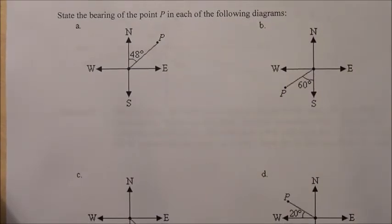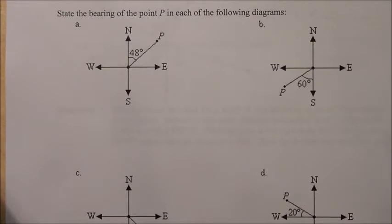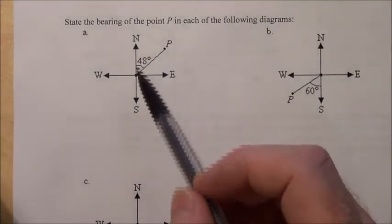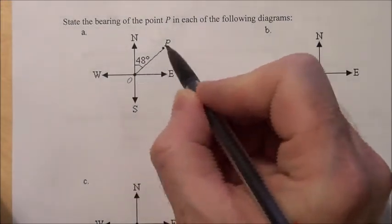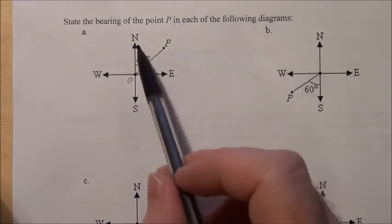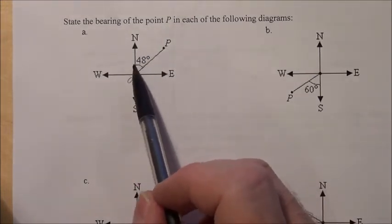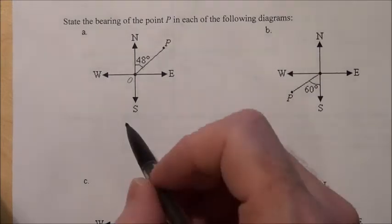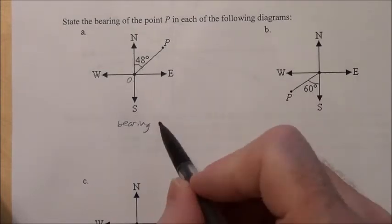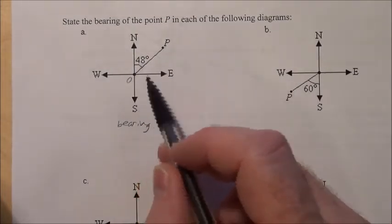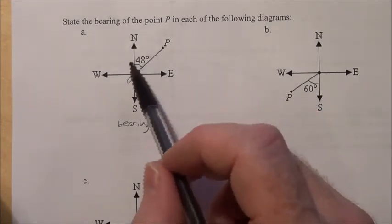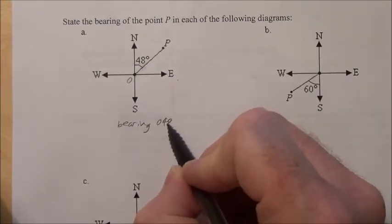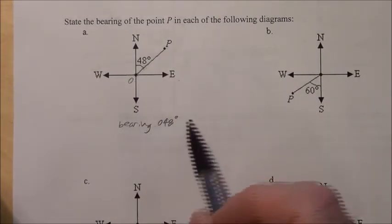Here's a little example: state the bearing of point P in each diagram. In Part A, from the origin, rotating clockwise from north down to line segment OP gives an angle of 48 degrees. In cardinal directions that is north 48 degrees east, and for the bearing we just say 048 degrees, confirming it's clockwise.